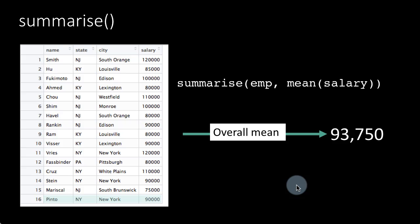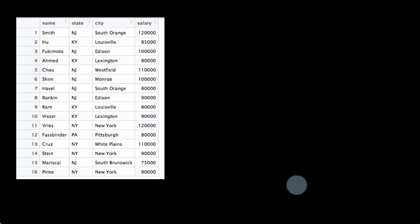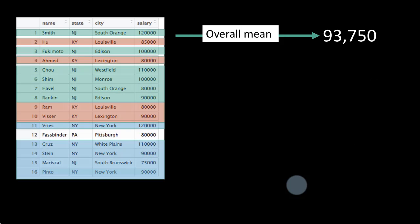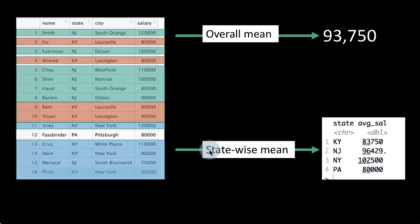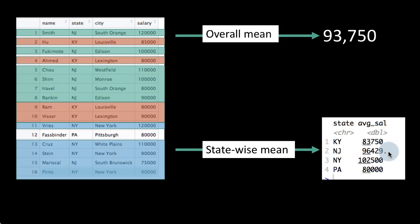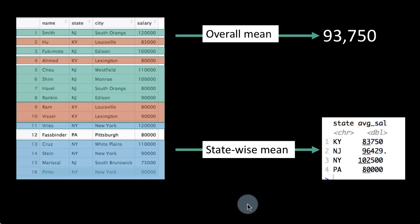So now we'll turn our attention to doing grouped summaries. Suppose I want to find the summary for states. If we did that, then what I've done is I've colored the rows for the different states. If you did a statewide mean, then this is the summary you expect to get — Kentucky's average is $83,750, New Jersey's average salary is $96,429, etc. I have not shown you the way in which you use the summarize function to get this, but this is what we are trying to do now, and you can do that just as easily as you did for the entire table.